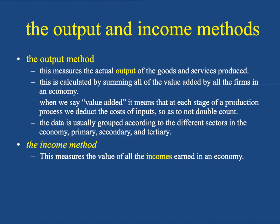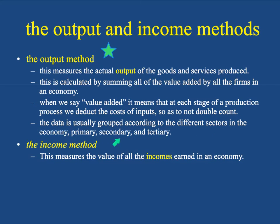Now, there are three different ways of measuring GDP. One is called the output method. This means you take the total output of the goods and services produced, and it's calculated by summing all of the value added by all of the firms in an economy. When we say value added, it means that at each stage of the production process, we deduct the cost of inputs so as to not double count. The data is usually grouped according to the different sectors of the economy: primary, secondary, and tertiary.